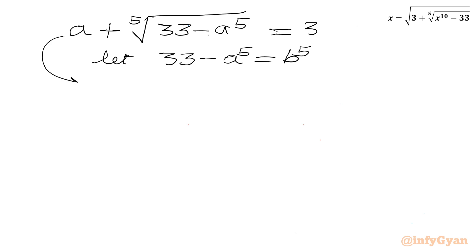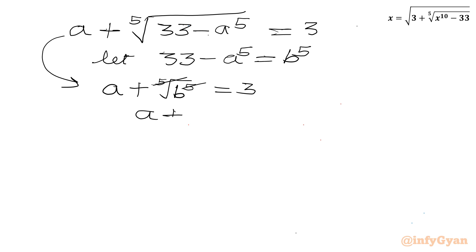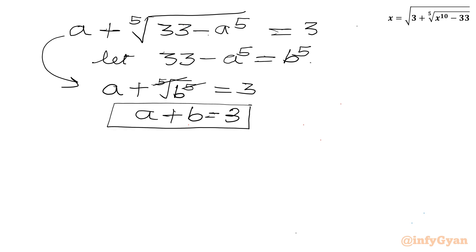Now it's substitution time. Let 33 minus a to the power 5 equal b to the power 5. The equation becomes a plus fifth root of b to the power 5 equals 3, and since the fifth root and power 5 cancel, we get a plus b equals 3 as our first equation. The second equation is a to the power 5 plus b to the power 5 equals 33.